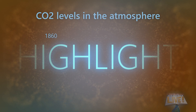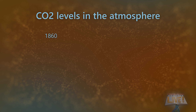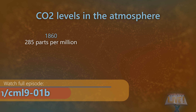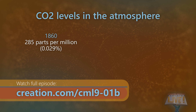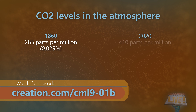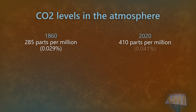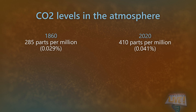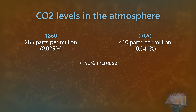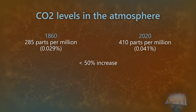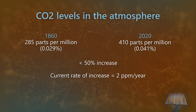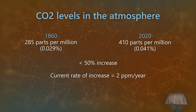In 1860, the amount of CO2 in our atmosphere was approximately 285 parts per million, or 0.029%. Now, as of 2020, it was 410 parts per million, or 0.41%. So that's just under a 50% increase over 160 years. And the current rate of increase is about 2 parts per million per year.